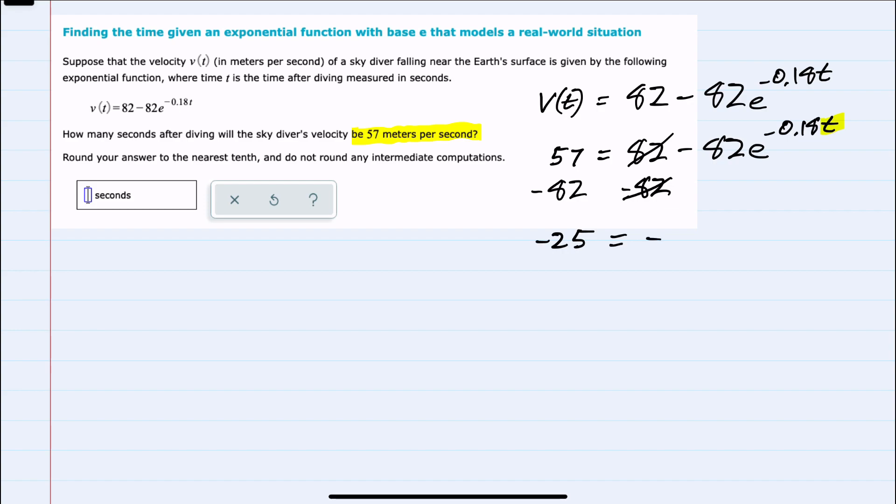Bringing down the rest of the right-hand side, I can continue isolating the t since this negative 82 is just being multiplied by the exponential part here. I can divide both sides by negative 82 to again simplify the right-hand side, leaving me with just the e to the negative 0.18t. And on the left-hand side, the negatives would cancel, leaving me just 25 over 82.